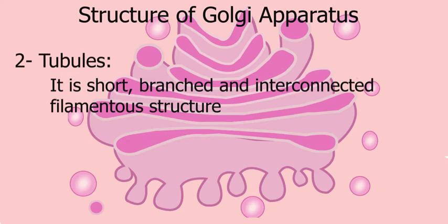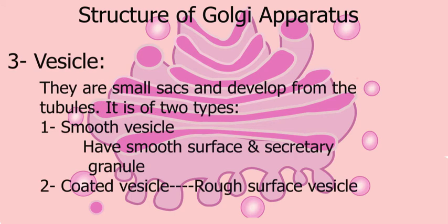Tubules are short, branched, and interconnected filamentous structures. Vesicles are small sacs that develop from the tubules. They are of two types: smooth vesicles and coated vesicles.